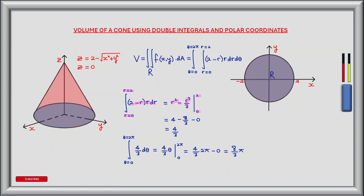Plugging in r equals 2 we get 4 minus 8/3, and plugging in r equals 0 we get 0. This leaves 4 minus 8/3 which simplifies to 4/3.